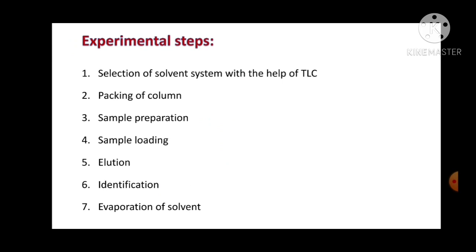These are the experimental steps to perform column chromatography. First, we need to select the solvent system, which is done with the help of thin layer chromatography. We take our mixture, spot it on a TLC plate, try different solvent systems, and optimize to get the appropriate RF value for the compounds we want to separate.